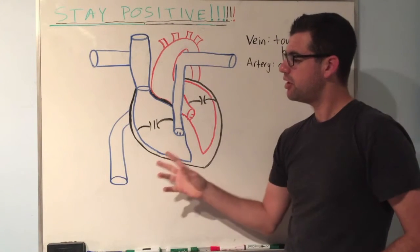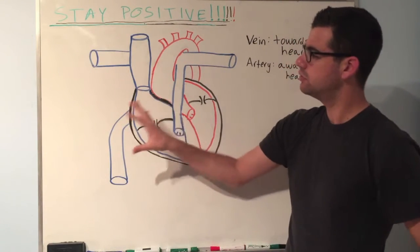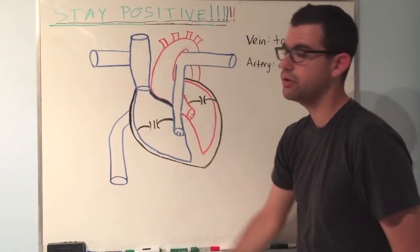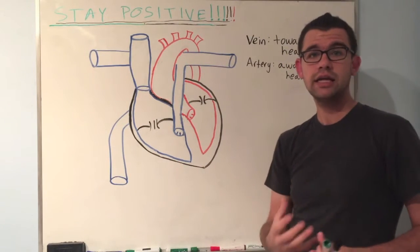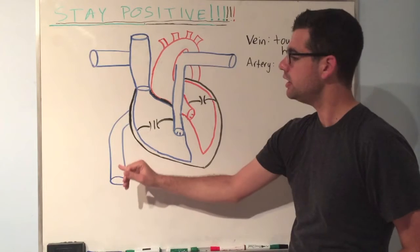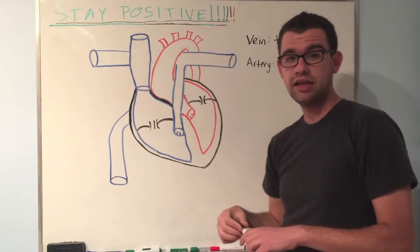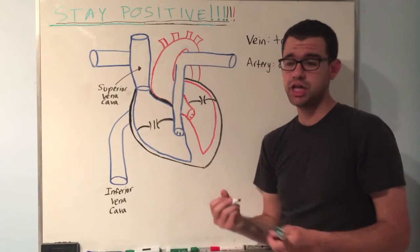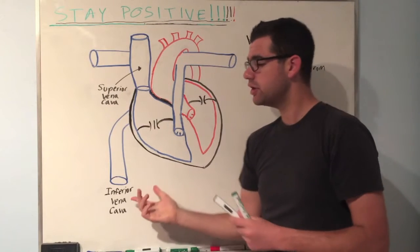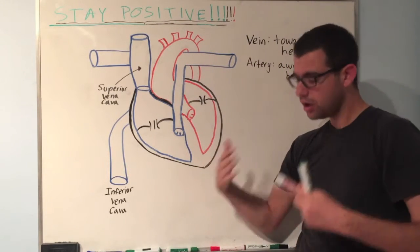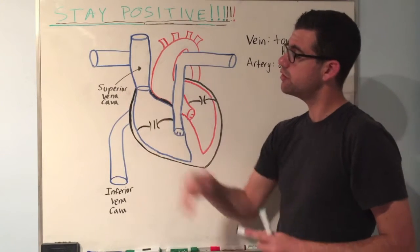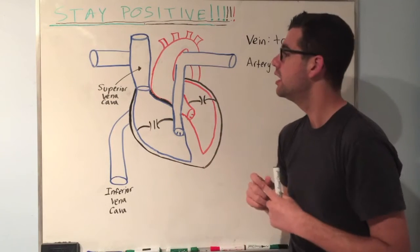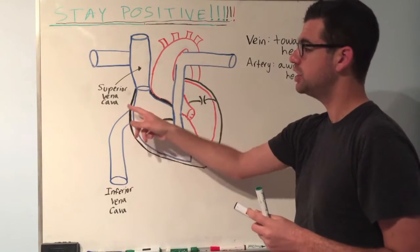There are two primary methods for returning deoxygenated blood to the heart, and that is through the superior vena cava and inferior vena cava. They're both very large vessels — veins specifically — that return deoxygenated blood to the heart. The inferior vena cava brings deoxygenated blood back from your lower extremities, whereas the superior vena cava does the same thing but from your upper extremities, like your head. So both of these return deoxygenated blood to your heart.